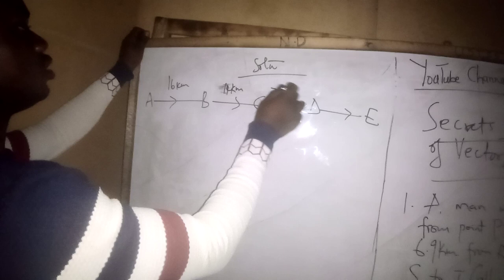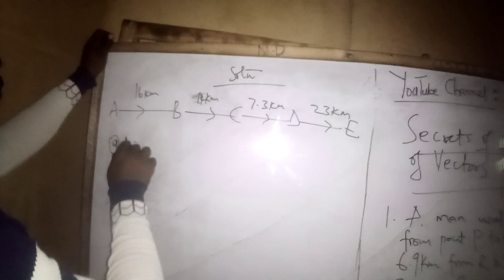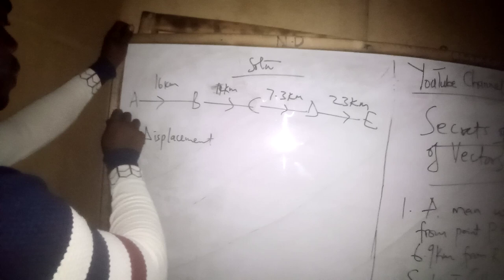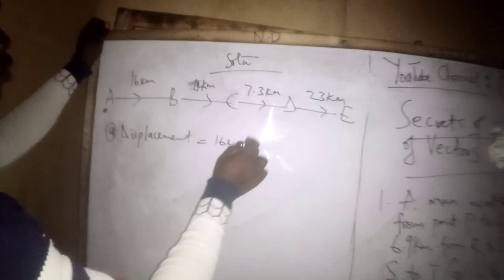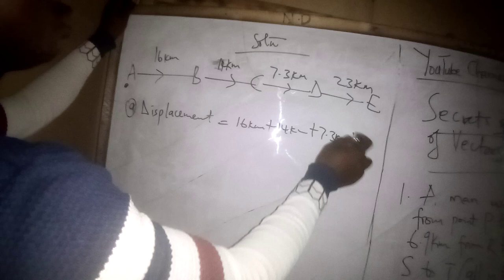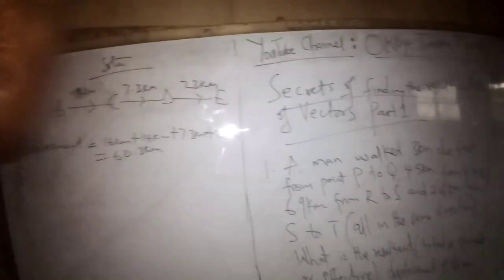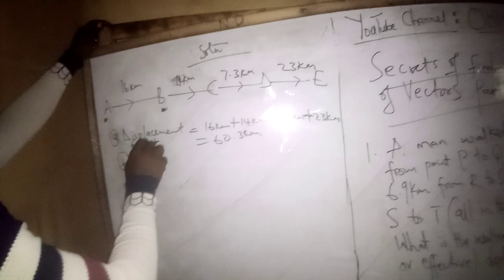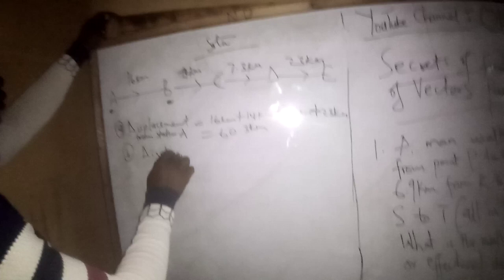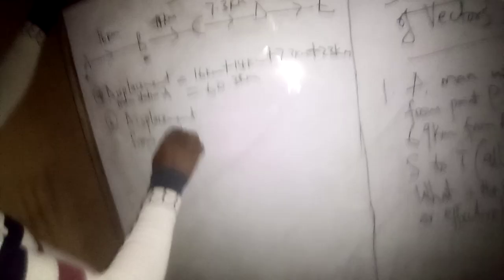Simply add the displacements. Displacement from Station A: 16 + 14 + 7.3 + 23 = 60.3 kilometers. Displacement from Station B: add from B onward — 14 + 7.3 + 23 = 44.3 kilometers. Displacement from Station D: only 23 kilometers remains.